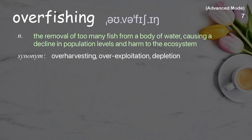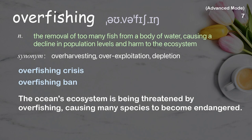Overfishing: The removal of too many fish from a body of water, causing a decline in population levels and harm to the ecosystem. Examples: Overfishing crisis. Overfishing ban. The ocean's ecosystem is being threatened by overfishing, causing many species to become endangered.